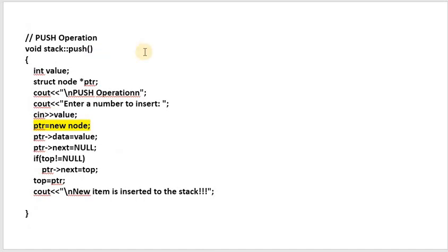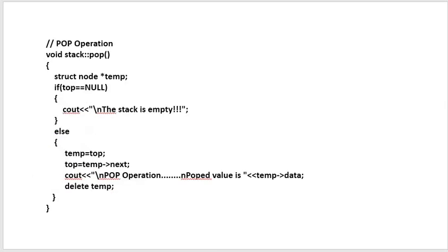In the push operation, you take an element, create a new node ptr, set ptr->data equal to value, and ptr->next to null. If top is not equal to null — meaning it's not the first element — set ptr->next to top, then top equals ptr. In the pop operation, same as the algorithm: struct node* temp; if top equals null print 'stack is empty'; else assign temp = top, top = temp->next, and delete temp.